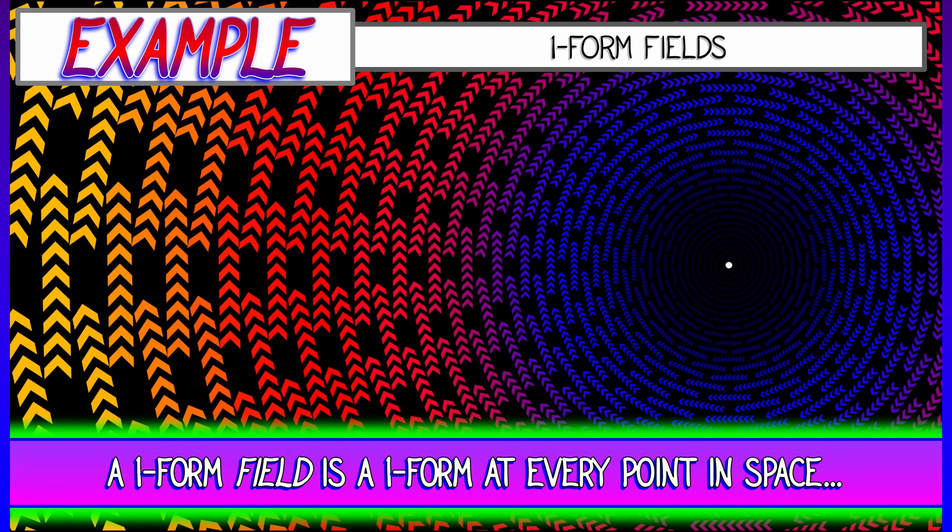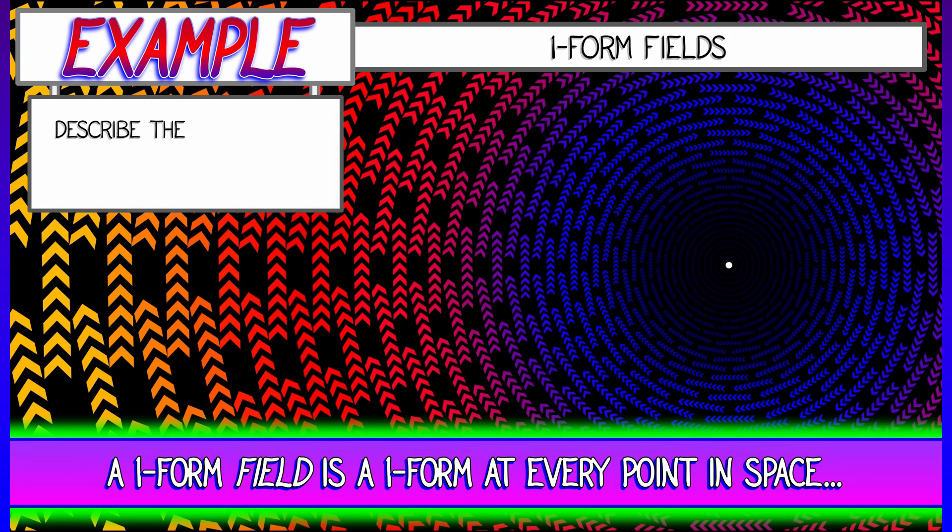What's a one-form field? That means you have a one-form at every point in space. But these can change their orientation, their scale, their direction. So for example, if we looked at the one-form field y dx - x dy, and said, well, what does that look like? Well, it's rotating in a clockwise direction about the origin, much in the same way that the dual vector field y i - x j rotates, as we have previously seen.